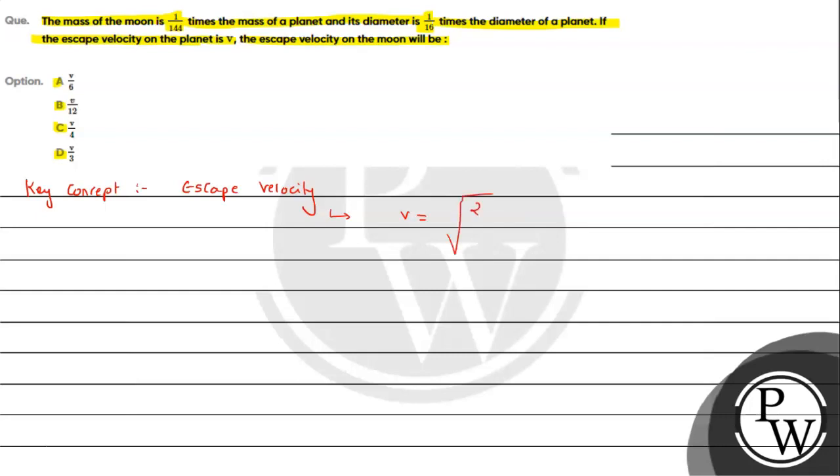The escape velocity expression we have already derived by conservation of energy, so it is the expression square root of 2GM by r. This is valid for any planet when the body is projected from the surface. G is the universal gravitational constant, M is the mass of the planet, r is the radius of the planet.